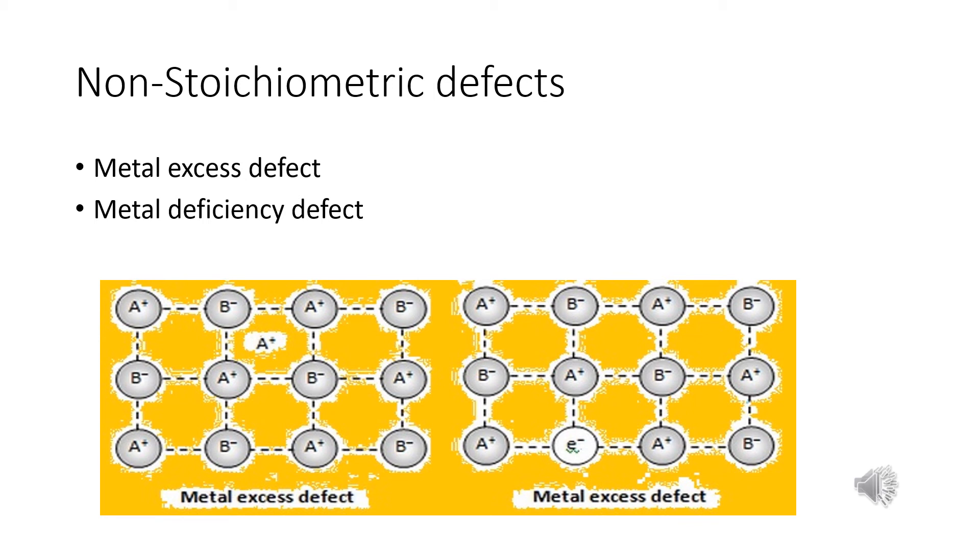This happens by loss of electron by sodium atoms to form Na+ ions. The released electrons diffuse into the crystal and occupies anionic sites. As a result, the crystal now has an excess of sodium. So, the anionic sites occupied by unpaired electrons are called F-centers.